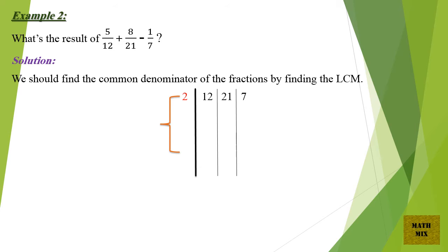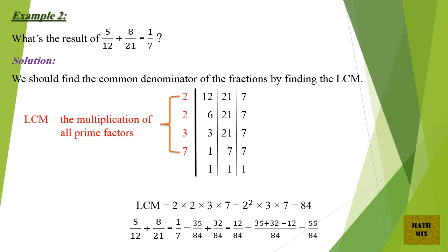12 is divisible by 2 giving 6; 21 and 7 are not divisible by 2. 6 is divisible by 2 giving 3; 21 and 7 are still not divisible by 2. 3 and 21 are divisible by 3, giving results 1 and 7 respectively; 7 is not divisible by 3. 7 and 7 are divisible by 7, giving results 1 and 1. LCM = 2 × 2 × 3 × 7 = 2² × 3 × 7 = 84.